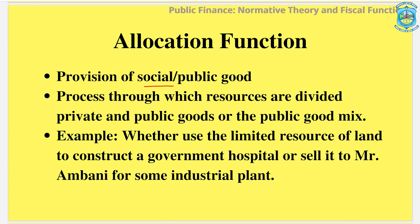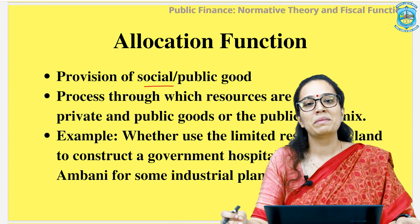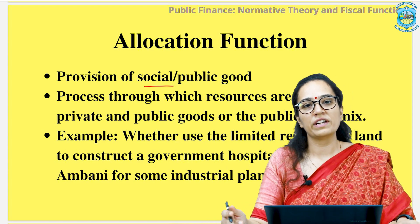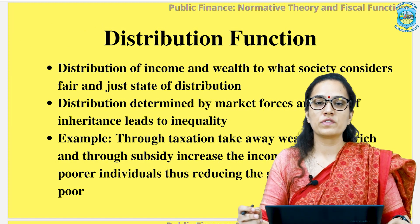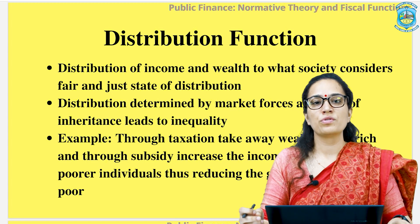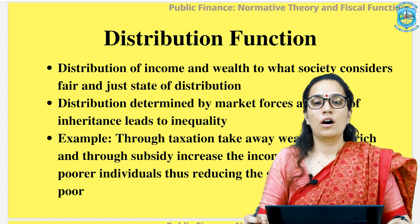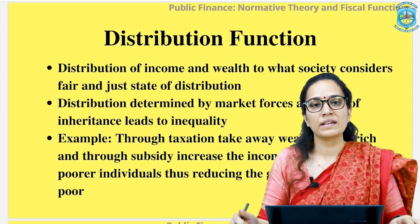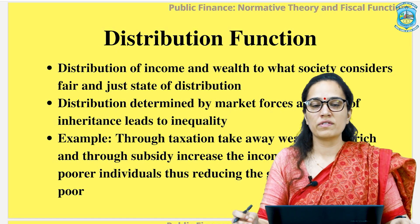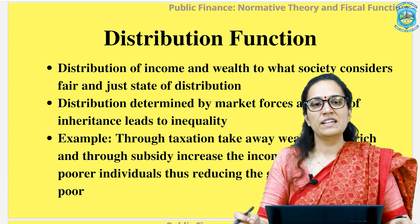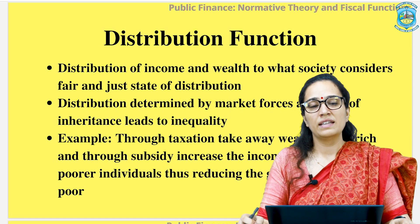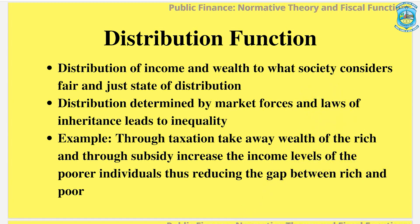Depending on the socio-economic objective of health conditions and social well-being, the government decides whether to go for a hospital or an industrial unit. The second core function of the government is distribution of income and wealth. It tries to reduce the inequality prevailing in the economy. According to the just and fair distribution understood by the economy as a whole, the government tries to achieve that kind of distribution. Through measures of taxation and subsidy, the government ensures it taxes the wealthy more and subsidizes the poor more as compared to the general public.